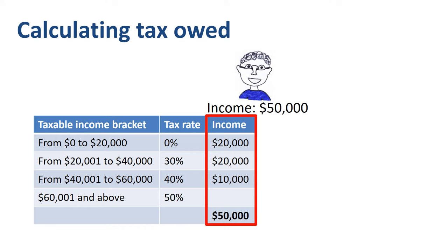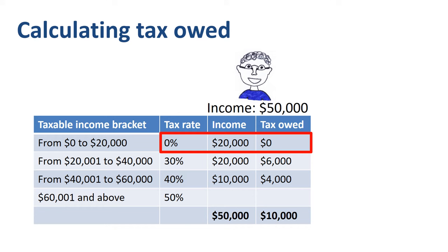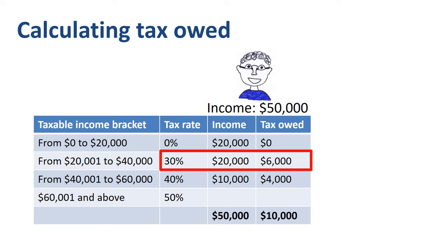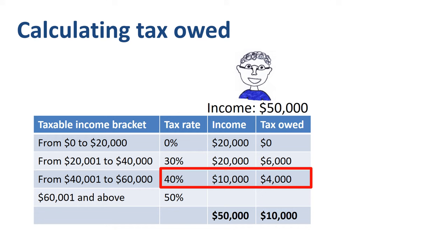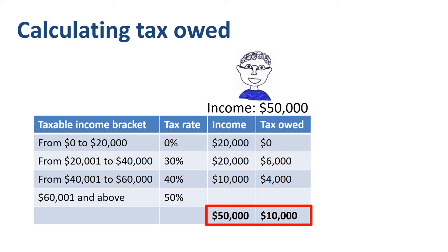Then we apply the tax rate for each tax bracket. 0% tax on the first $20,000 of taxable income. 30% tax on the next $20,000 of taxable income, which is $6,000 tax owed. 40% on his remaining $10,000 of taxable income, which is $4,000 tax owed. In total, $10,000 tax is owed on the taxable income of $50,000.